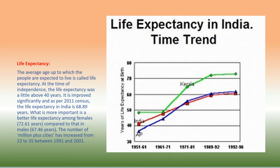Life expectancy: the average age up to which the people are expected to live is called life expectancy. At the time of independence, the life expectancy was a little above 40 years. It has improved significantly, and as per the 2011 census, the life expectancy in India is 68.89 years. Female life expectancy is higher at 72.61 years compared to males at 67.46 years. The number of million-plus cities has increased from 23 to 35 between 1991 and 2001.